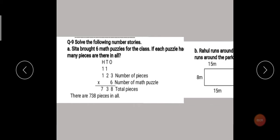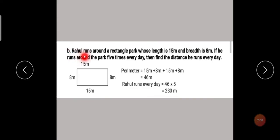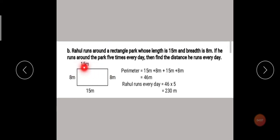Let's see the second story. Rahul runs around a rectangular park whose length is 15 meters and breadth is 8 meters. If he runs around the park five times every day, then find the distance he runs every day. So students, Rahul runs around a rectangular park. See this is the rectangular park — you assume this is your rectangle park.